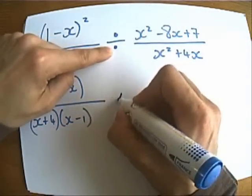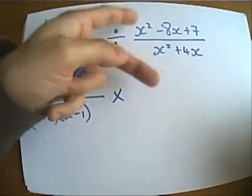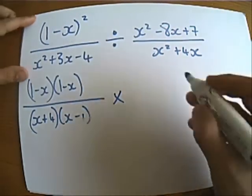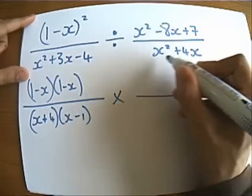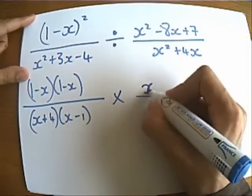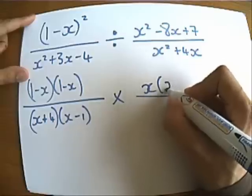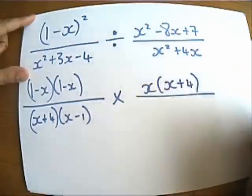Let's change the divide to a times. And now let's flip this fraction over. So I'm now going to write the x squared plus 4x on the top, but I'm also going to factorise that as well. And there's a common factor of x that I can take out of that.